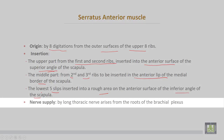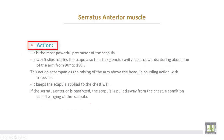The nerve supply comes from the roots of the brachial plexus via the long thoracic nerve, also called the nerve to serratus anterior. The actions of serratus anterior: it is the most powerful protractor of the scapula and keeps the scapula applied to the thoracic wall. The lower five slips rotate the scapula so that the glenoid cavity faces upward during abduction of the arm from 90° up to 180°. This action accompanies raising the arm above the head and is coupled with the action of the trapezius muscle.